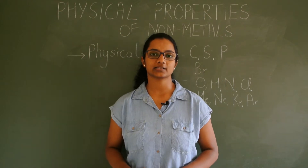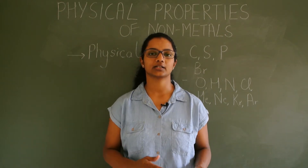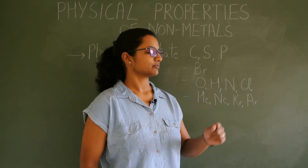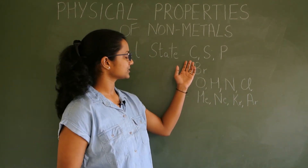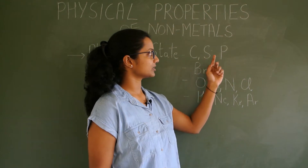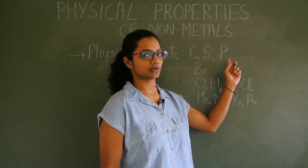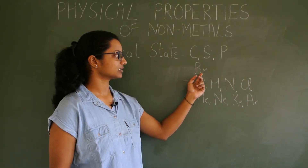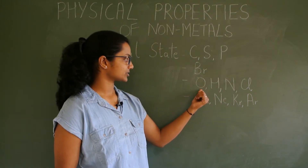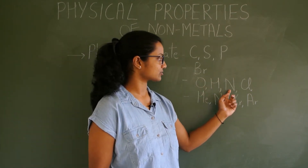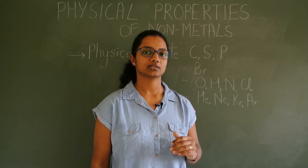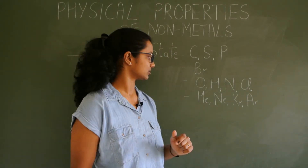Non-metals are normally in the form of solid, liquid or gaseous state. Some examples in the solid state are carbon, sulphur and phosphorus. Bromine is in the liquid state, and oxygen, hydrogen, nitrogen and chlorine are in the gaseous form. This is all under room temperature.